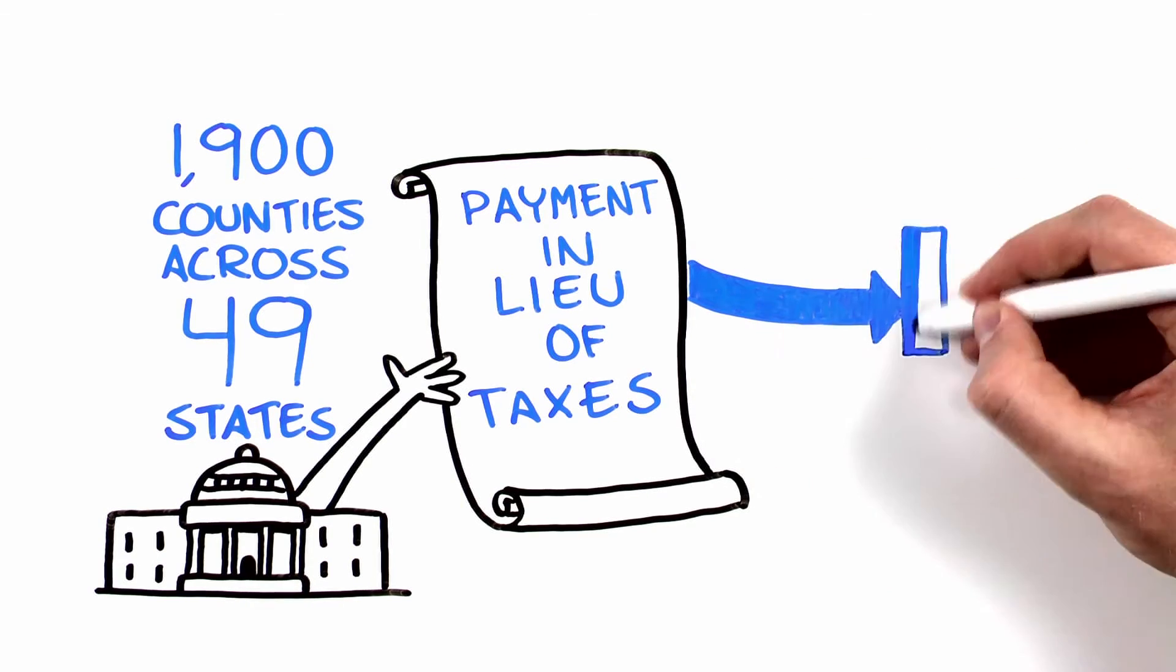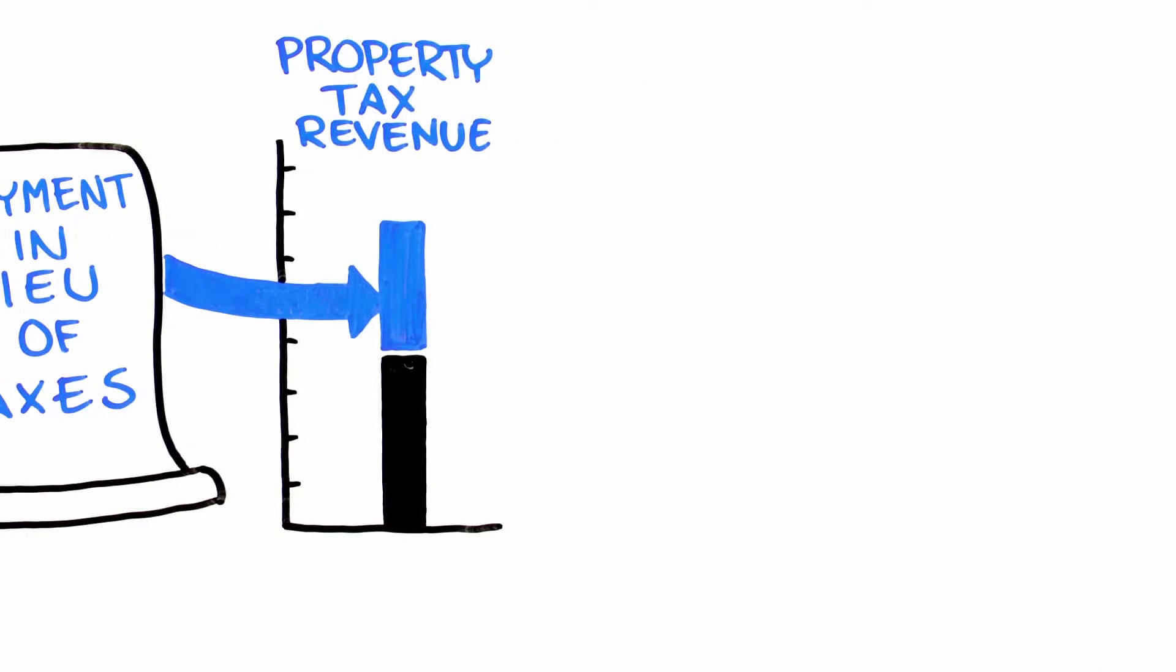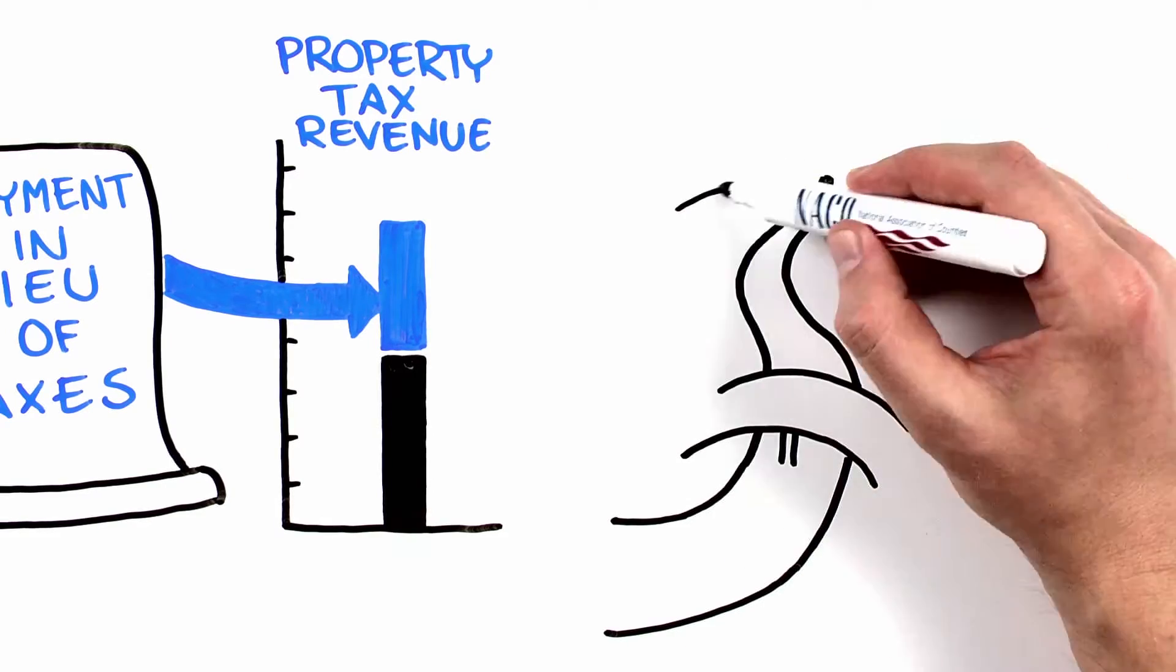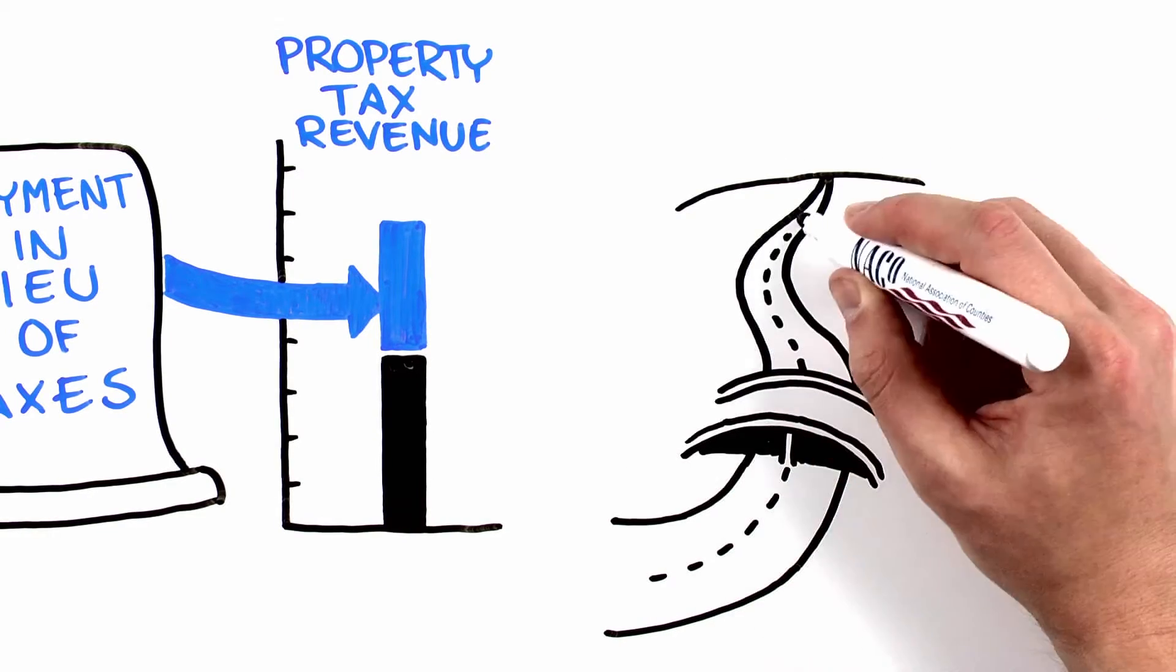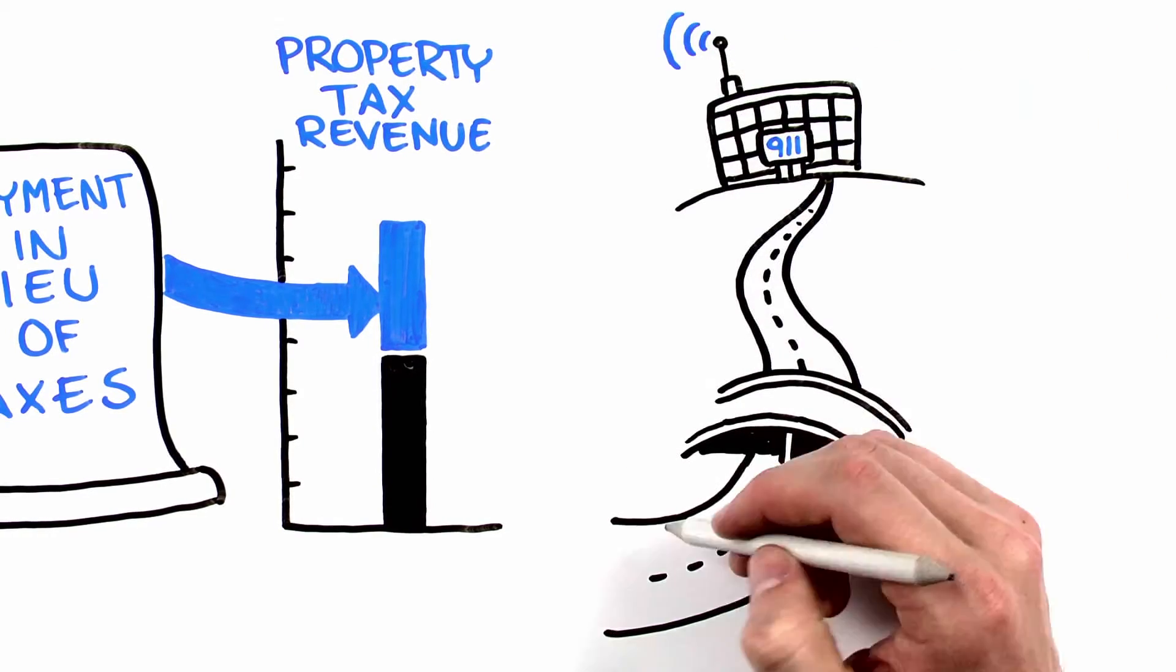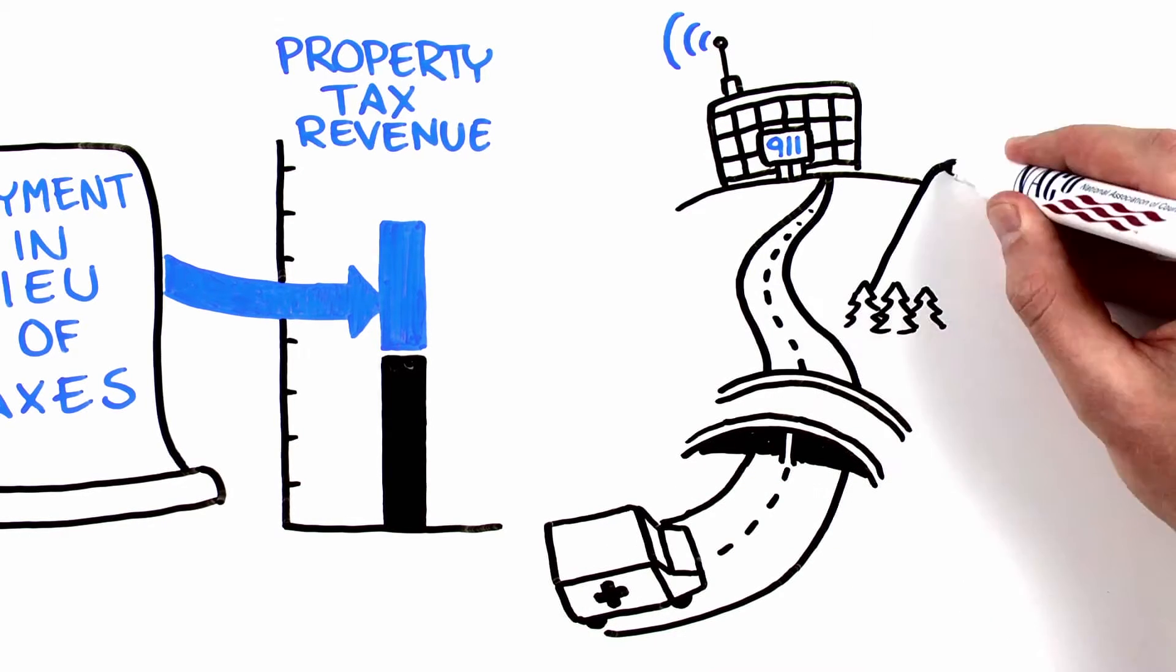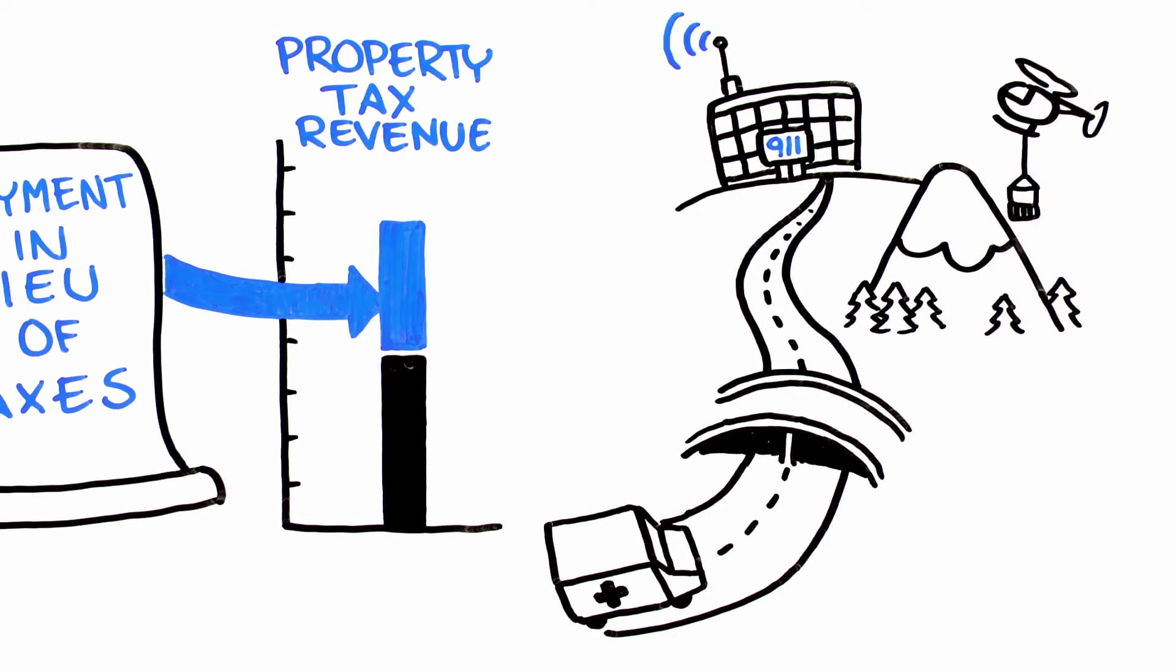PILT offsets the lost property tax revenue and helps counties provide essential services such as road and bridge maintenance, law enforcement and courts, emergency response, fire protection, public health, and solid waste disposal.